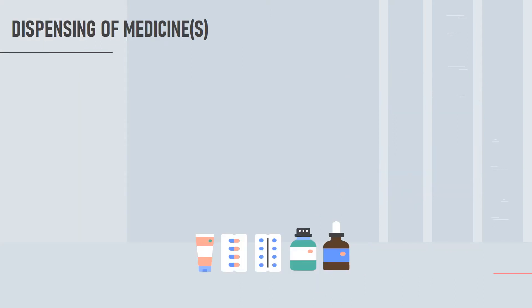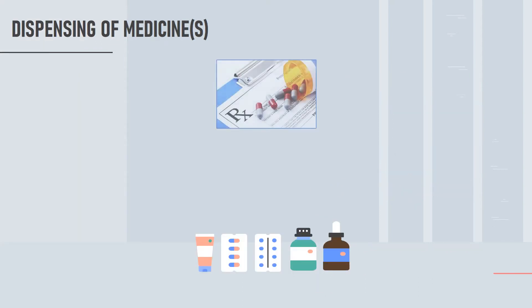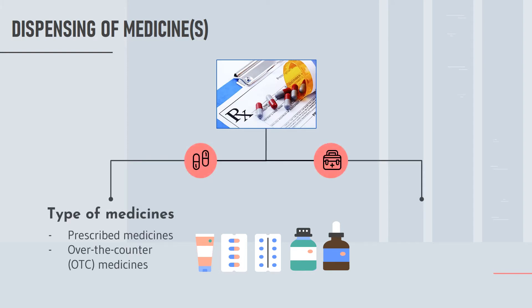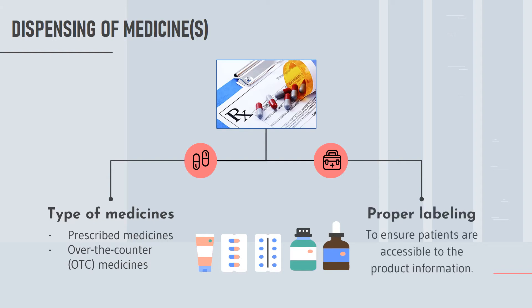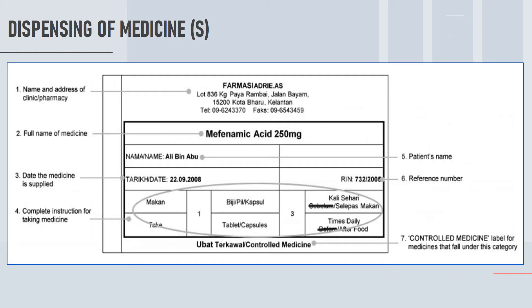Secondly, dispensing of medicines. It is well established that medicines are classified into two types which are the prescribed medicines and over-the-counter OTC medicines. Prescribed medicines can be bought in a community pharmacy with medical prescriptions whereas OTC medicines are easily accessible in the pharmacy without prescriptions. Proper labeling is important before dispensing the medicines to ensure the patients are accessible to the product information. This diagram shows a good example of proper labeling. The information on a label must be clear and easy to understand to ensure patients' compliance.